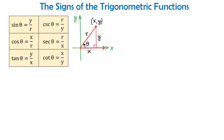In this video, we will talk about the signs of the trigonometric functions. Here we have the rectangular coordinate system and a point with the coordinates x and y that is located in quadrant 1.